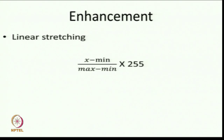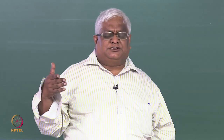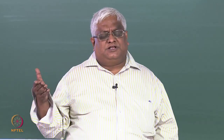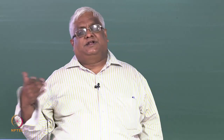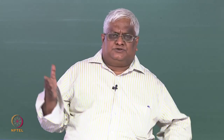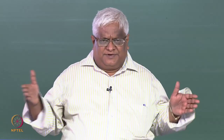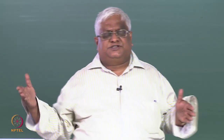The enhancement scheme is simple linear stretching. For each image you find the minimum gray value and the maximum gray value, and from each pixel value you subtract the minimum and divide by maximum minus minimum, then multiply by 255. So the minimum gray value in the original image corresponds to 0, and the maximum gray value corresponds to 255 in the transformed image. Since it is a linear function it is called linear stretching — a simple enhancement operator.